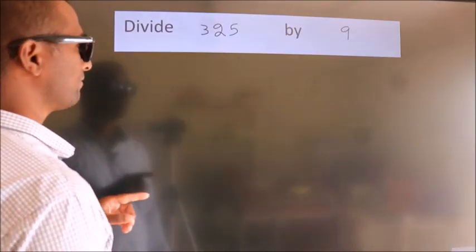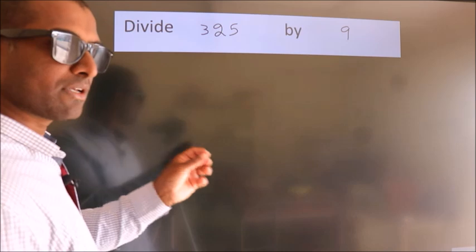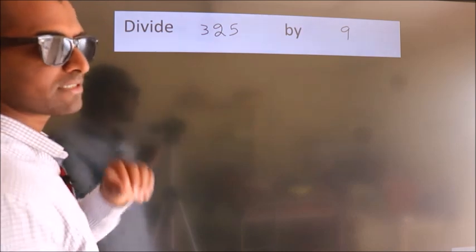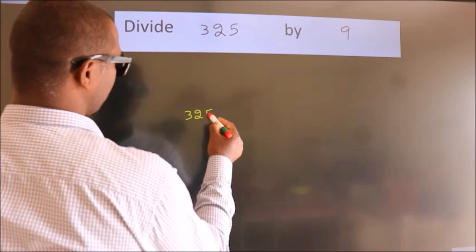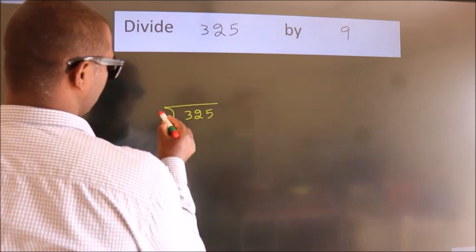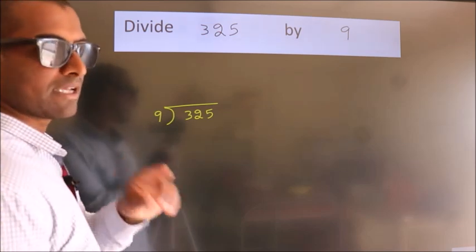Divide 325 by 9. To do this division, we should frame it in this way: 325 here, 9 here. This is your step 1.